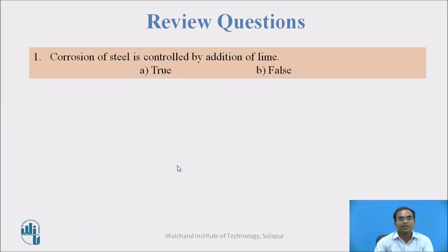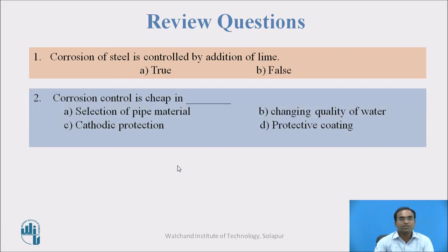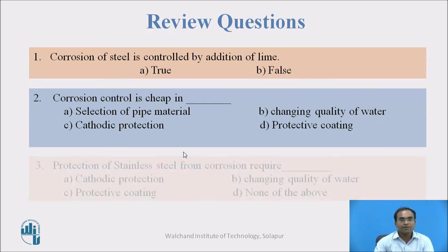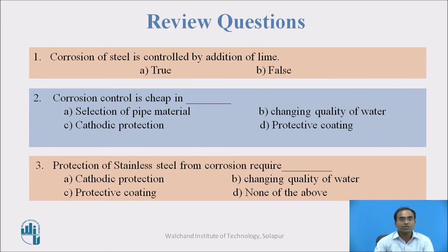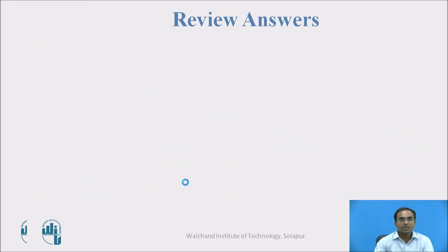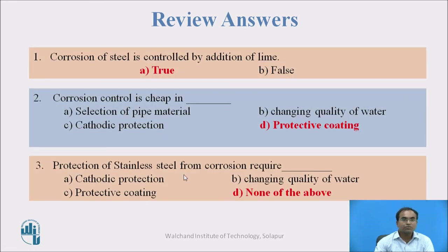Let's see some review questions. The first one: corrosion of steel is controlled by addition of lime — true or false. The second one: corrosion control is cheap in (a) selection of pipe material, (b) changing quality of water, (c) cathodic protection, or (d) protective coating. The third one: protection of stainless steel from corrosion requires (a) cathodic protection, (b) changing quality of water, (c) protective coating, or (d) none of the above. The answers: corrosion is mostly controlled by addition of lime — that is always true. Corrosion control is cheap only with protective coating. For protection of stainless steel from corrosion, the answer is none of the above, because stainless steel is basically an alloy and we must go for a proper higher-grade stainless steel.